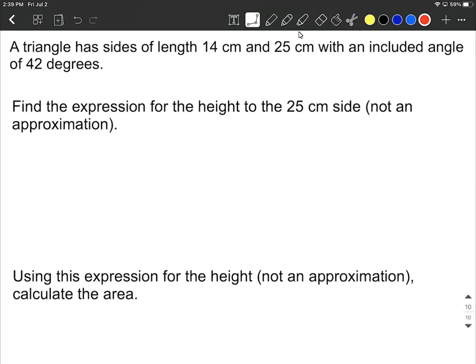In this example, we're told that we have a triangle and we have two side lengths given to us, 14 centimeters and 25 centimeters. And the included angle, meaning the angle in between these two side lengths, is 42 degrees.